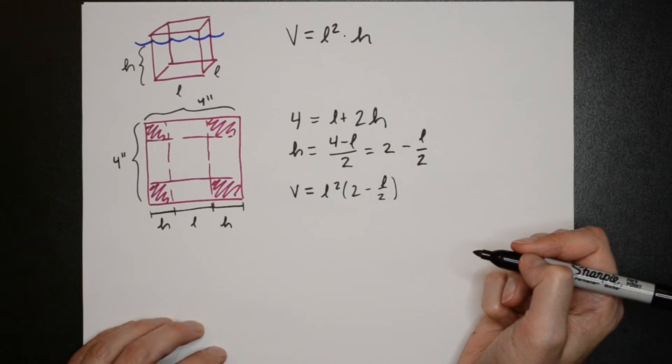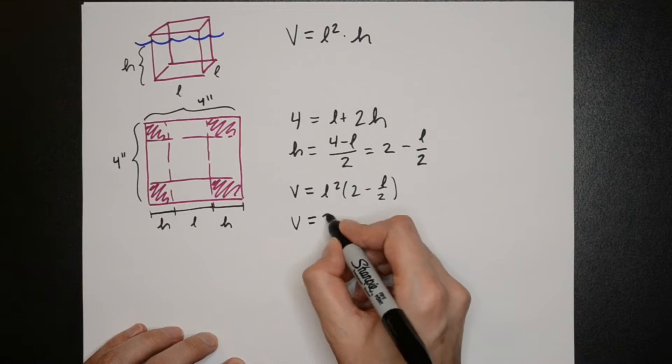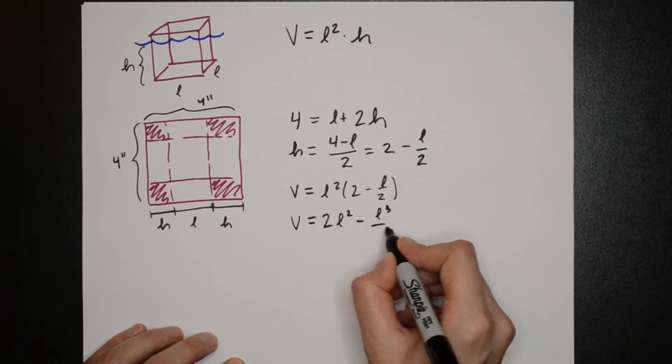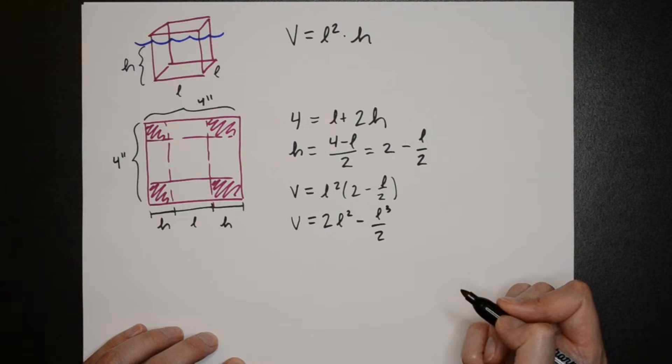I'm going to multiply this out and show you guys a different way that we can find the maximum volume. Last time we plotted volume as a function of its variable to get an approximate solution. This time we're going to use calculus to get an exact solution.